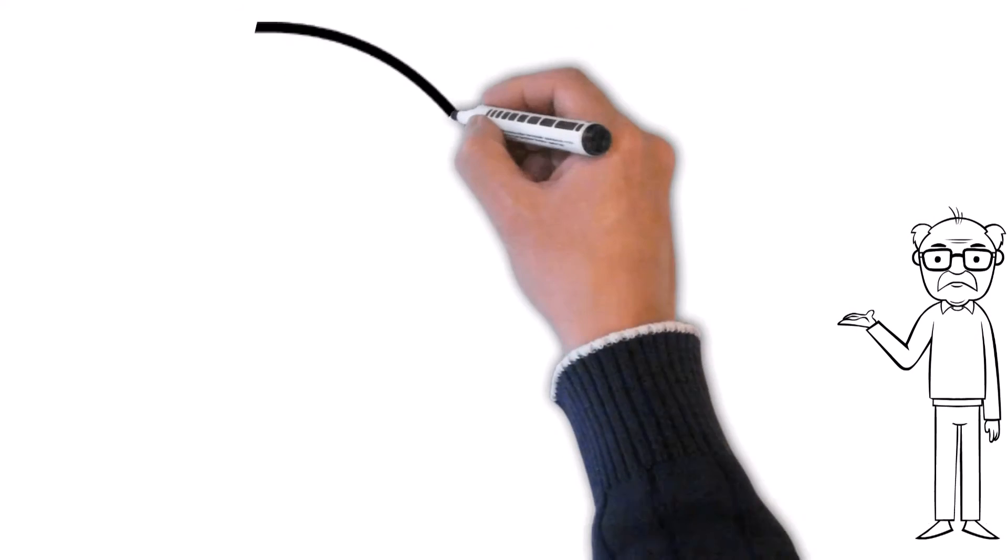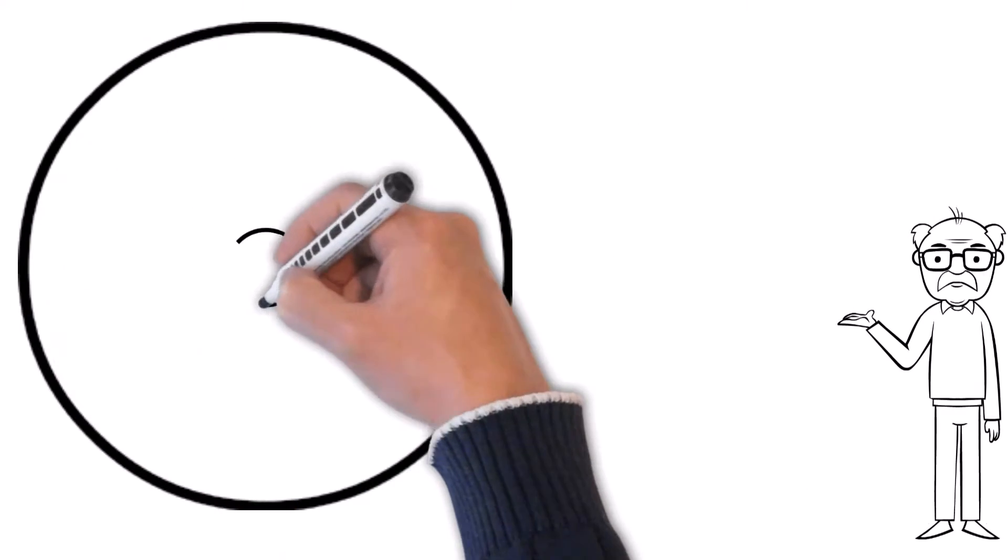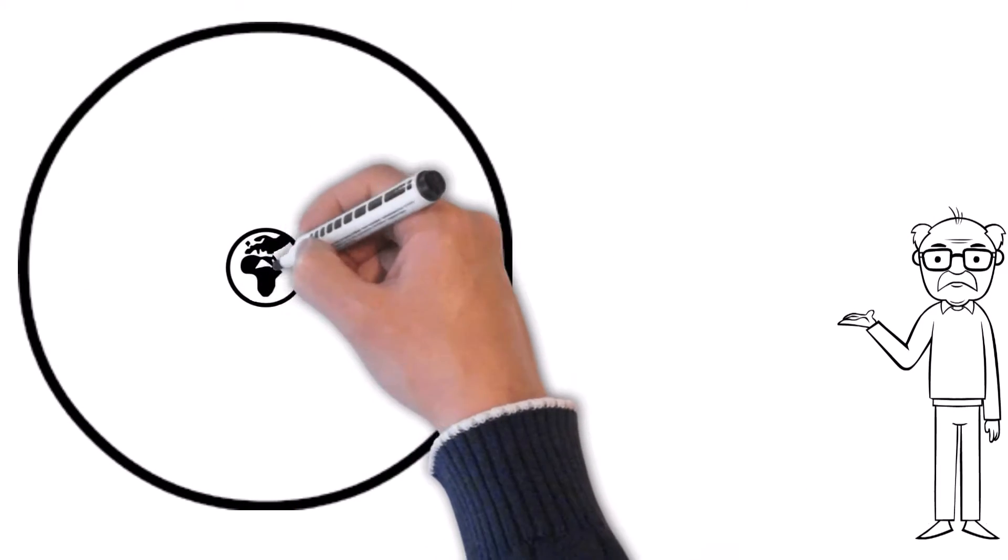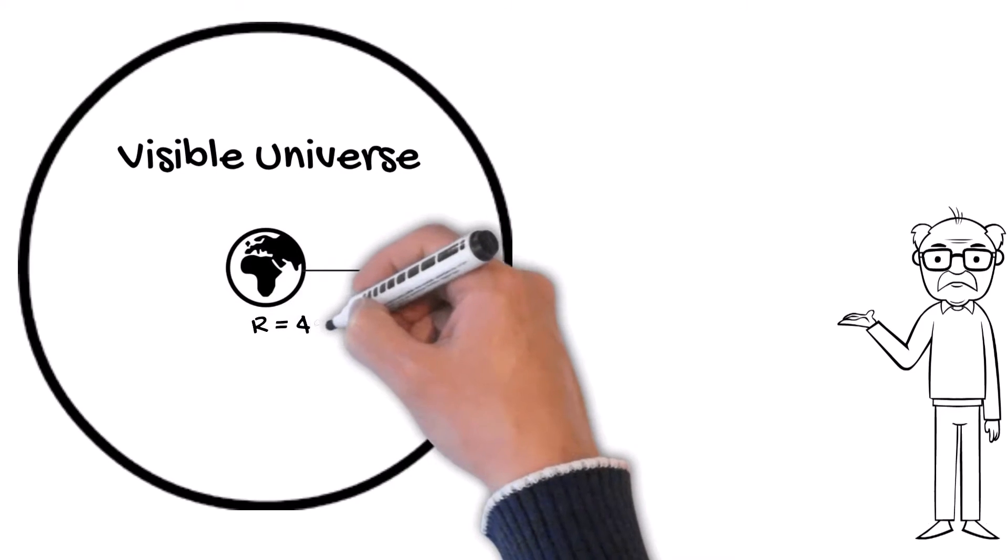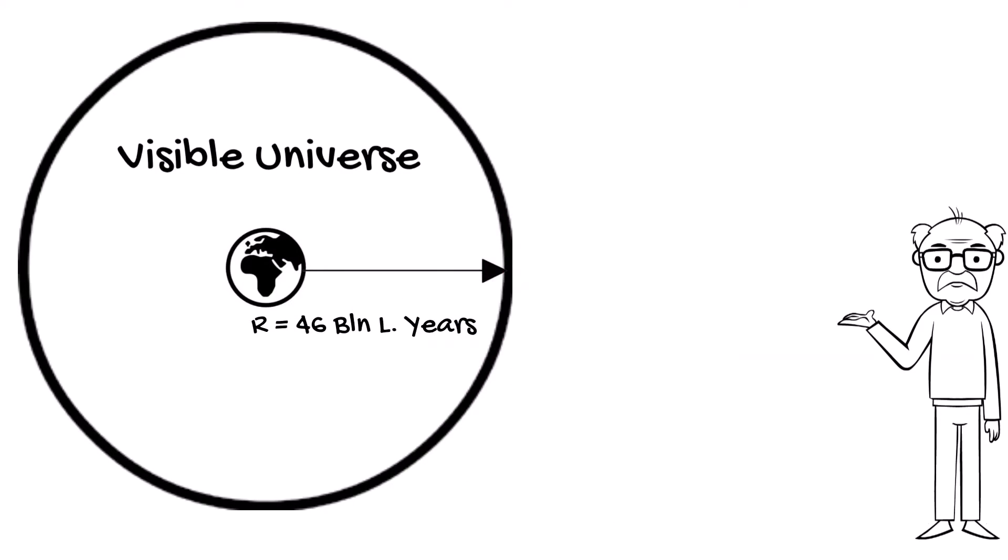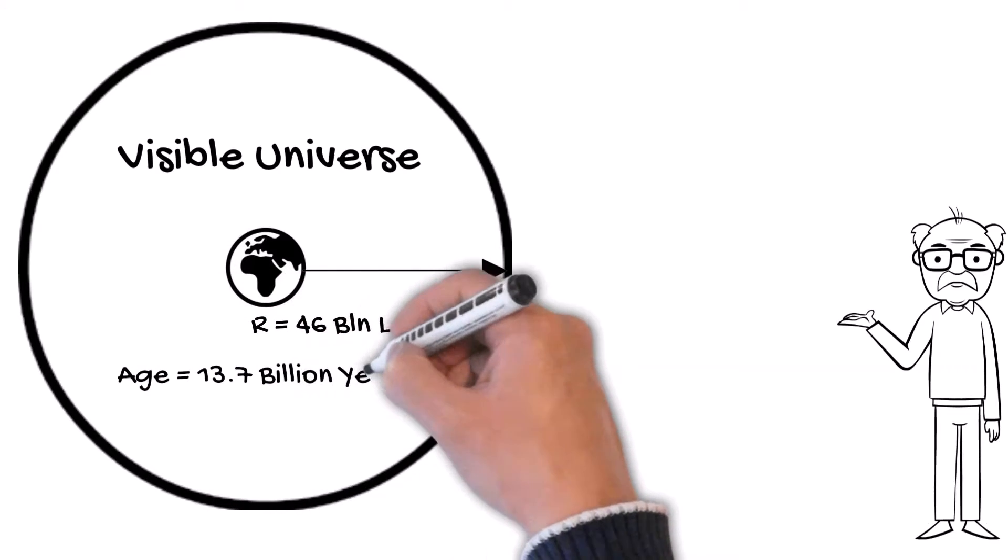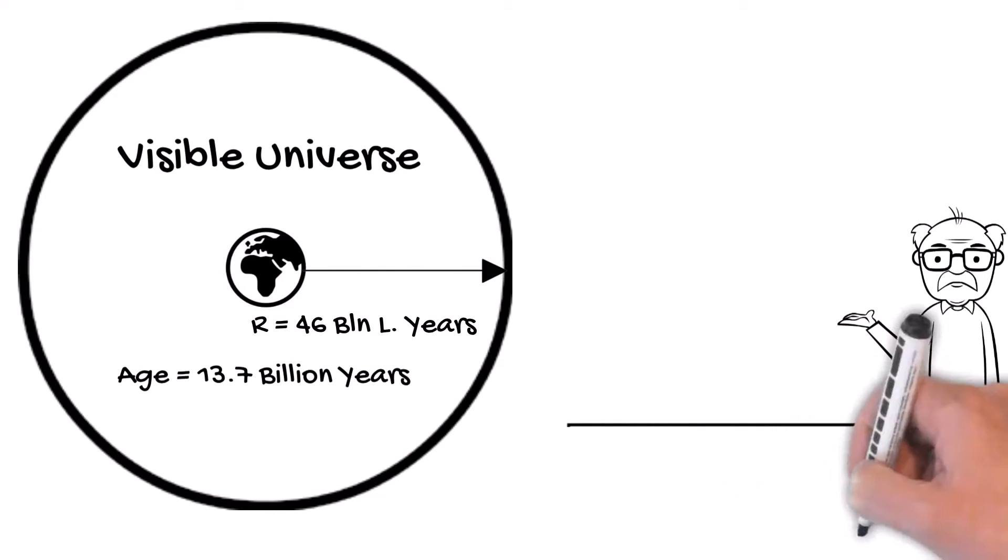Welcome to everyone. In the last episode, we talked about two important numbers: the radius of the universe, 46 billion light years, and the age of the universe of 13.7 billion years.